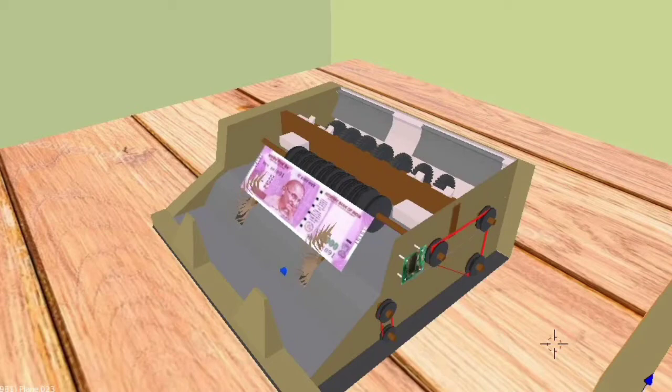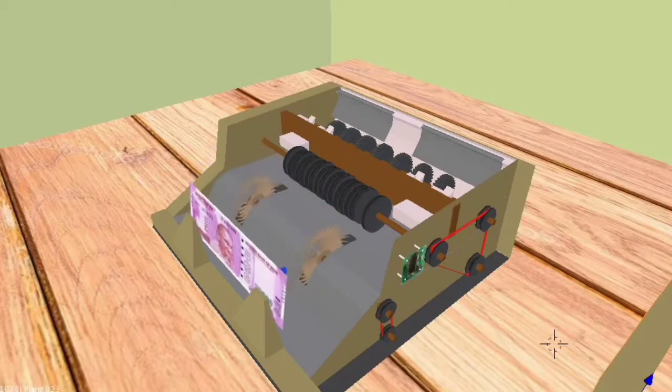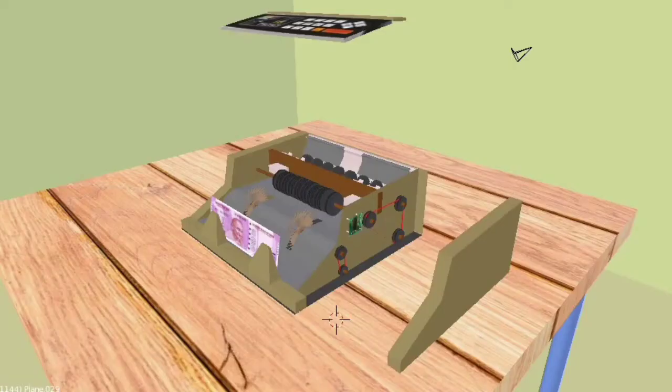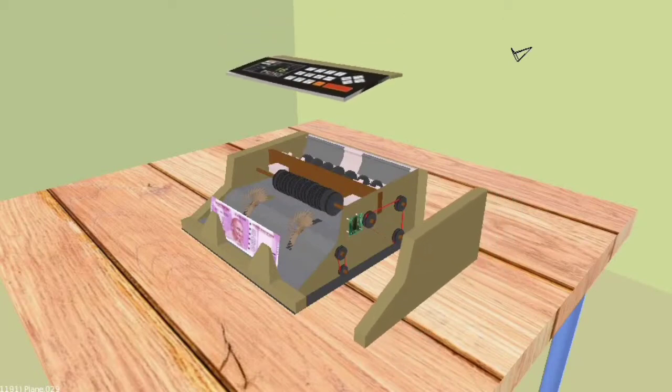Then the note moves forward. There is a stacker motor by which each note is collected and placed at the receiver end. At the receiver end, there is another sensor which is a speed rotational sensor which checks the speed of counting which may be too high or low and sends the signal to the controller. Then controller accordingly sets the travelling speed.